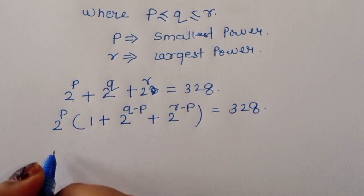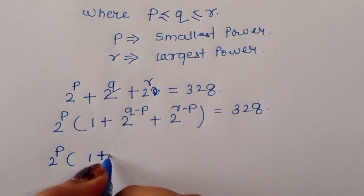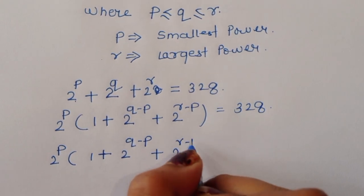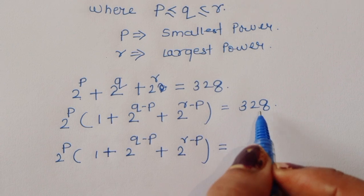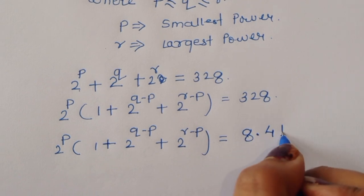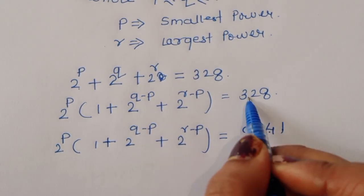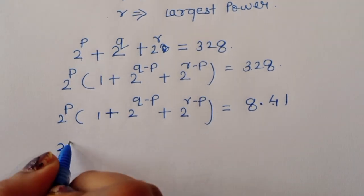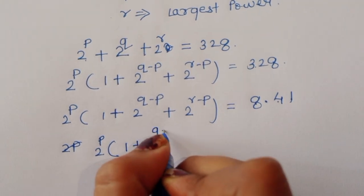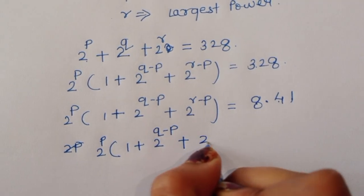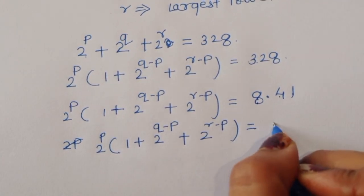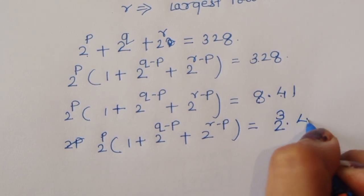Now, the factor of 328 — we can write 328 as 8 times 41. So 2 power P times (1 plus 2 power Q minus P plus 2 power R minus P) equals 2 power 3 times 41.